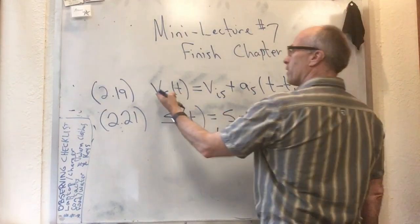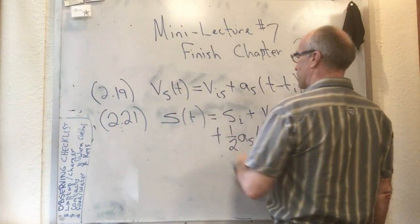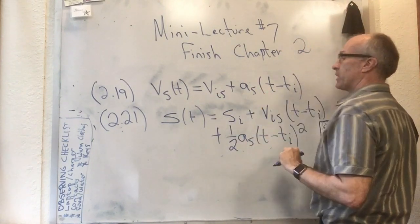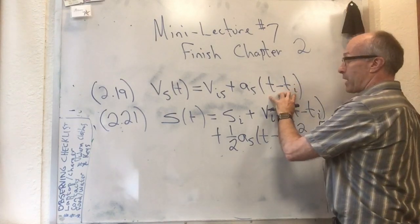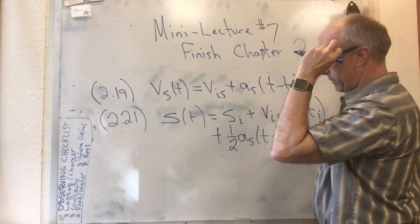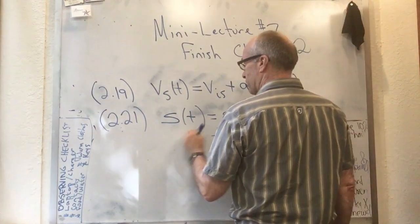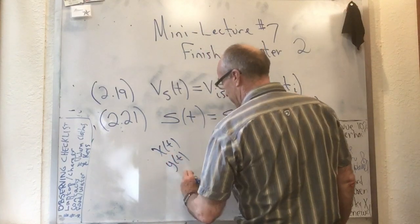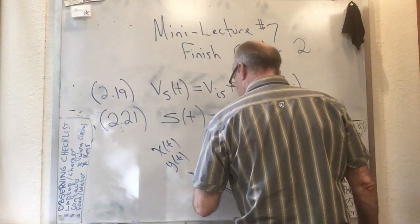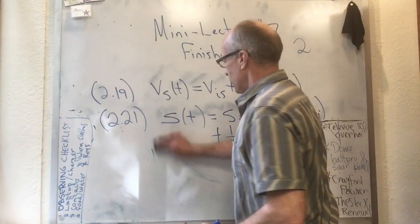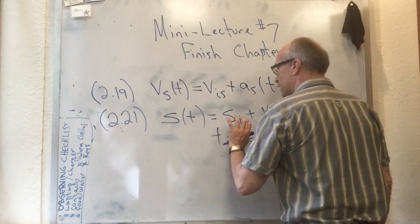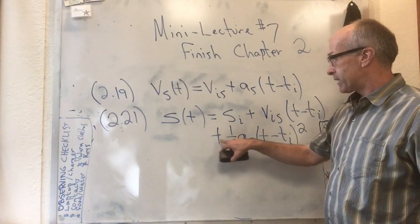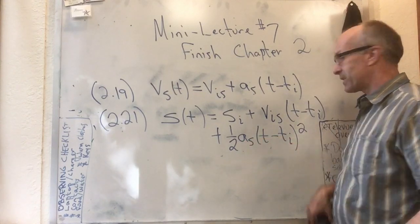There's my formula for velocity in the s-direction as a function of t: it's the initial velocity in the s-direction plus the acceleration in the s-direction times the elapsed time. That is the equation for constant acceleration. I'm also claiming that the position s(t) — which could be x(t), y(t), or motion along some diagonal measured in the s-direction — is equal to the initial s plus the initial velocity times the elapsed time plus one-half times the acceleration times (t minus t_i) squared.